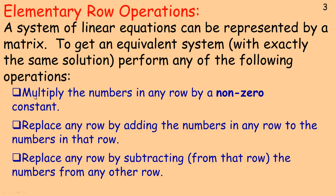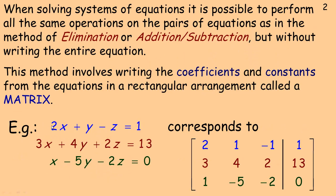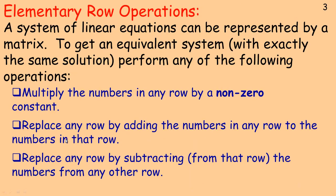There are 3 row operations. First, you can multiply the numbers in any row by a non-zero constant — this also includes dividing by a non-zero constant. If the entire equation is divisible by 2, dividing everything by 2 still gives the same line or plane. Second, you can replace any row by adding the numbers in one row to the numbers in another row — equivalent to multiplying equations and adding to eliminate a variable. Third, you can also replace any row by subtracting one row from another. These second two operations are very similar — one uses addition and one uses subtraction.